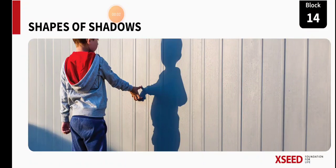Welcome to our next class. In last class you learned about luminous and non-luminous objects, and also learned how light is necessary to see any object. In today's class, we are going to learn what happens if anything comes in the way of light.